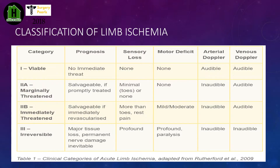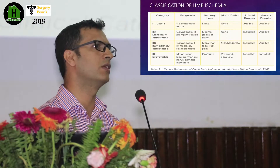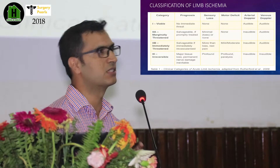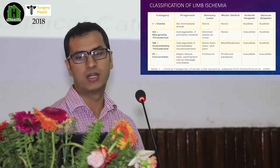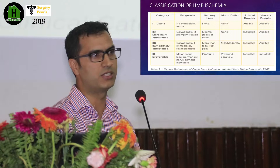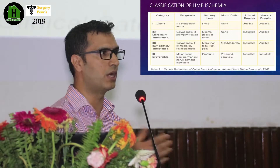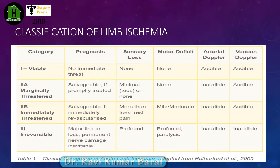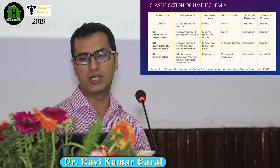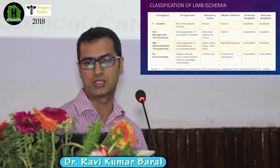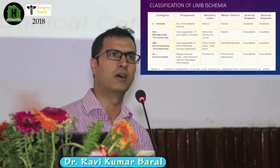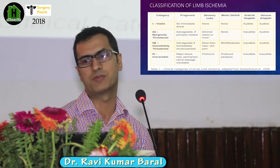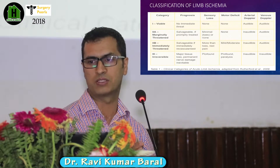The classification of limb ischemia is adapted from the TASC/SVS code. Type 1 is no immediate threat, but the patient may present with features of chronic limb ischemia like claudication, skin changes, and ulcers. Type 2A is marginally threatened and salvageable if promptly treated, defined by minor sensory deficit and minimal cardiovascular findings. From 2A onwards, we must intervene as early as possible.